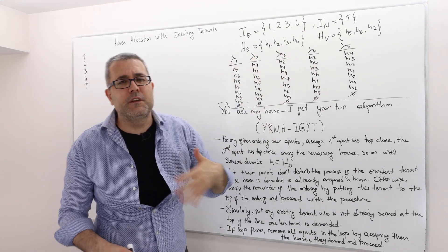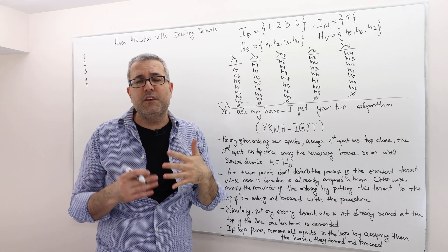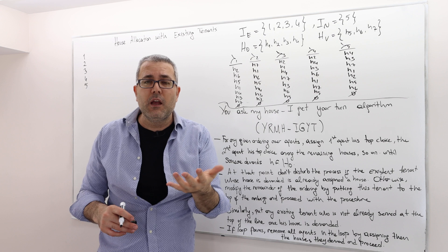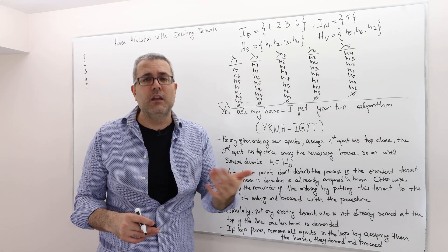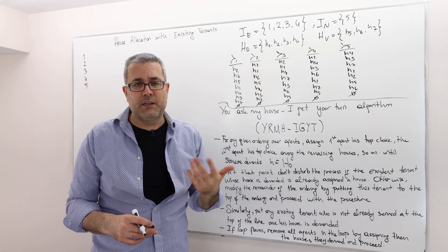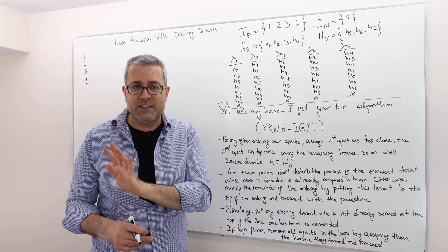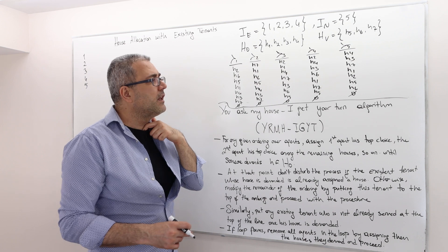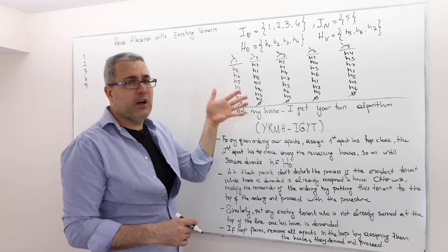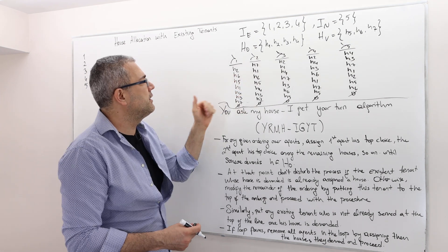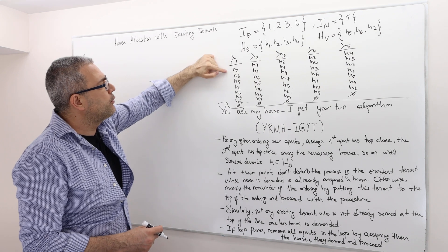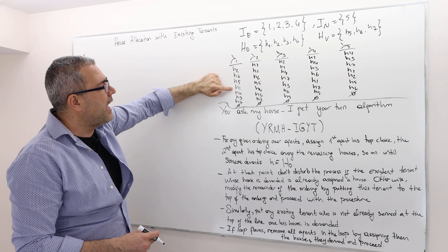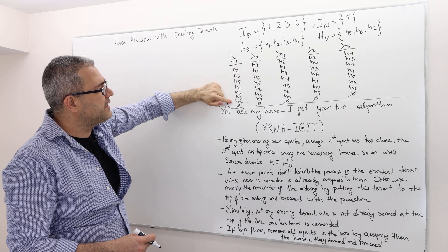Here are the preferences of the agents. We assume that they declare their preferences truthfully — we'll ask later whether it's really in their interest to do so. For example, agent 1 prefers house 2 over house 6, then house 5, house 1, house 4, house 3, and house 7.